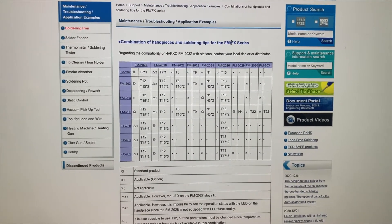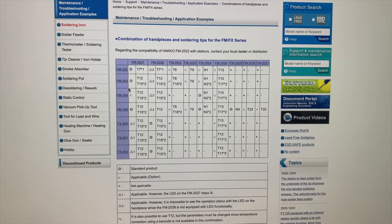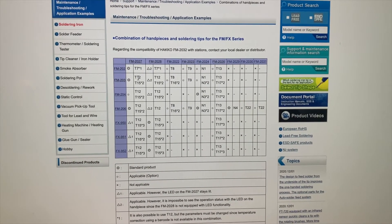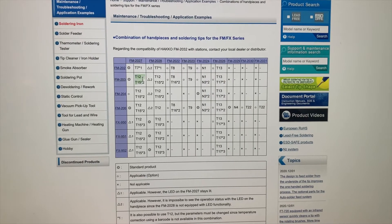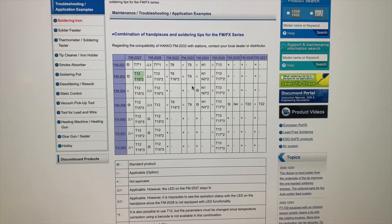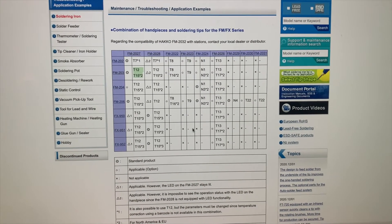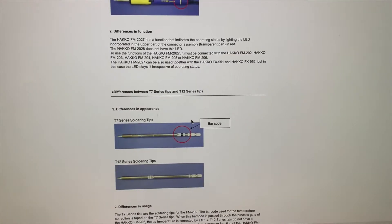Right, I'm on the Hakko official website, and here we have a chart of all their stations. In this chart here, it displays all the soldering tips. So under FM203, it has T12, T15, and so forth.